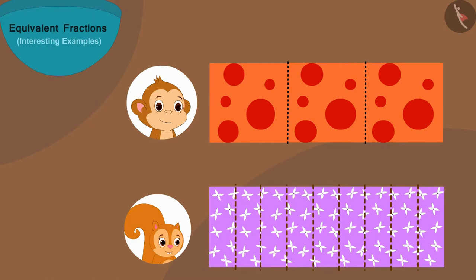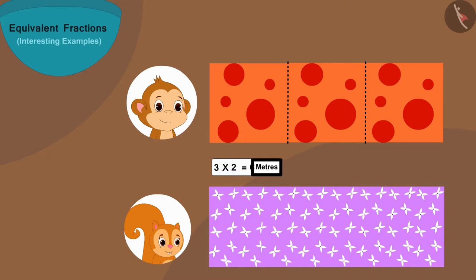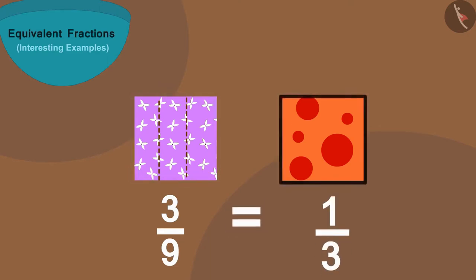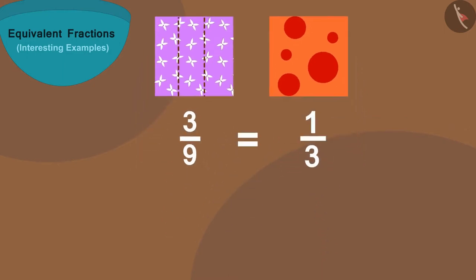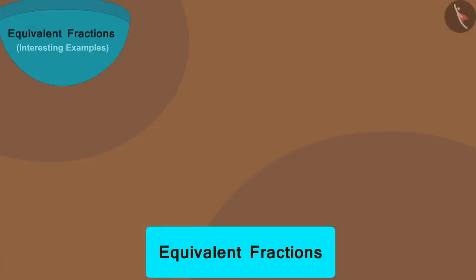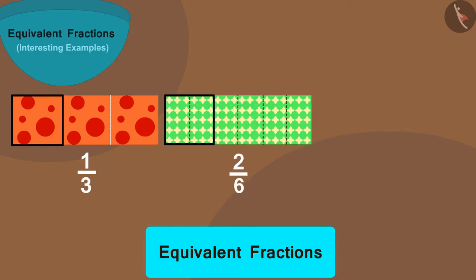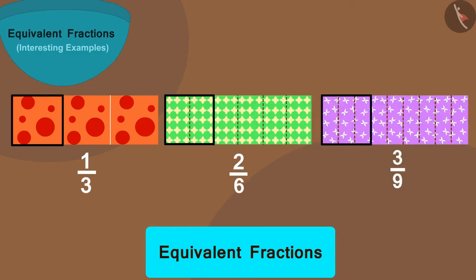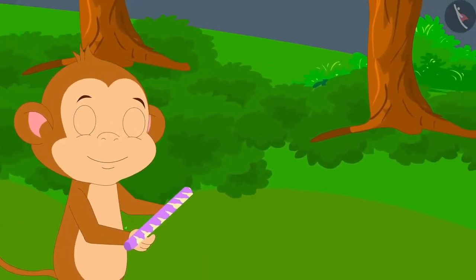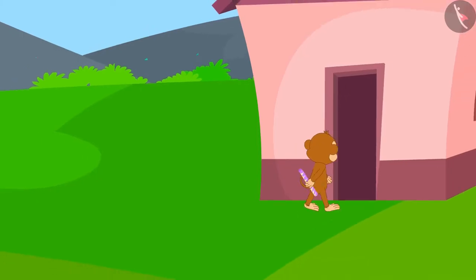In this way, Chanda has given Babban three times two, or six meters long cloth. Therefore, three ninths of Chanda's cloth is equal to one third of Babban's cloth, and these two are also equivalent fractions. So, one third equals two sixths equals three ninths — all these are equivalent fractions. Babban took three ninths part of Chanda's cloth and happily returned home.